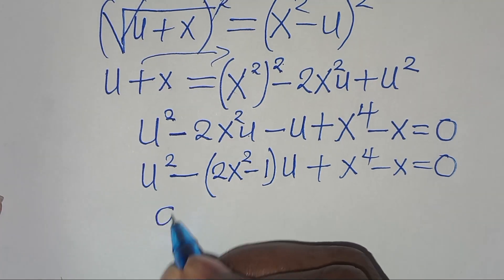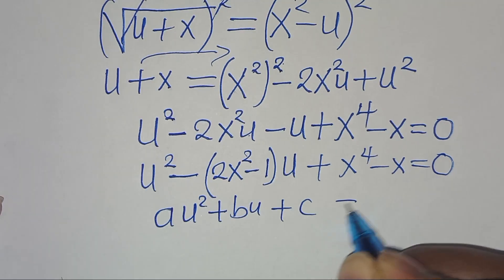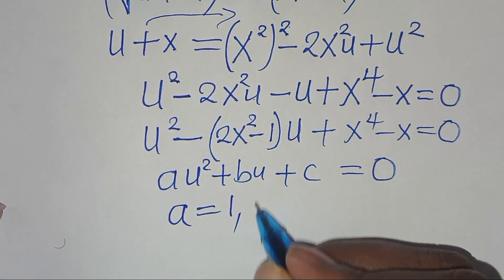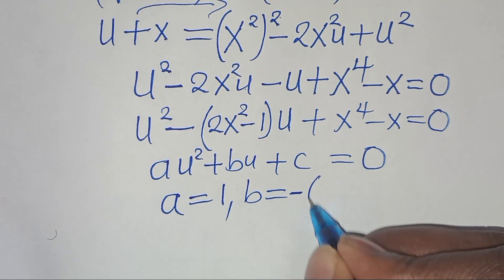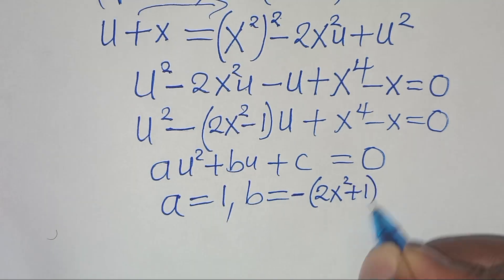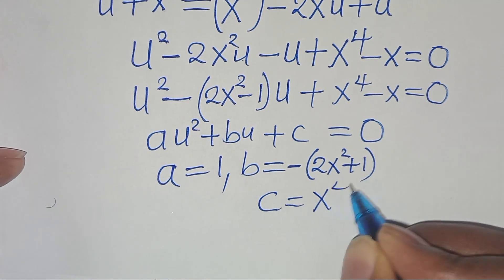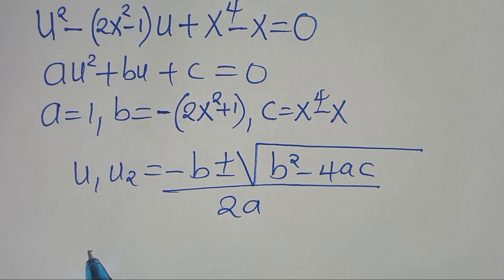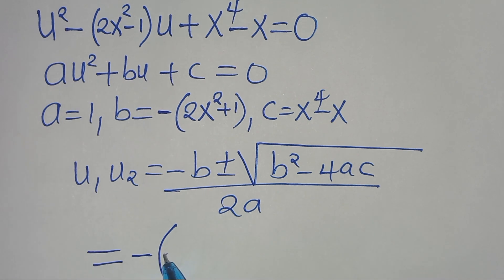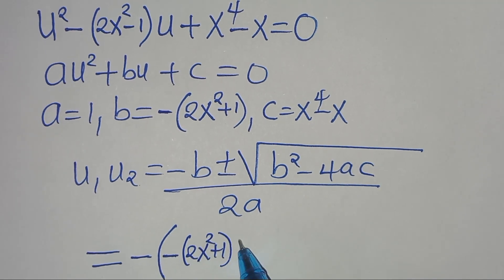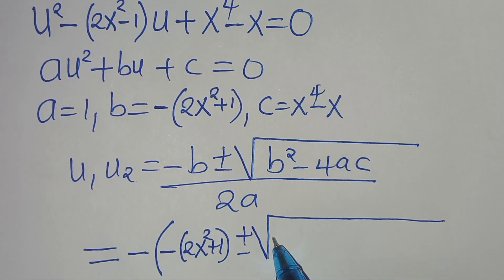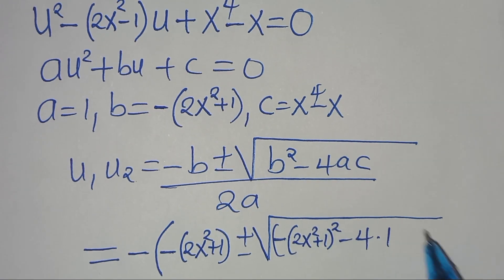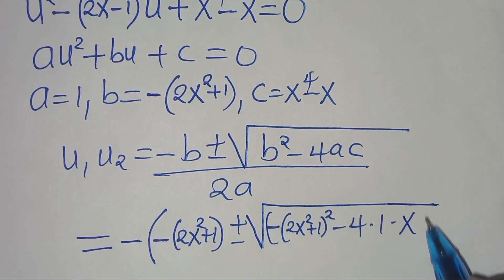From this quadratic equation, a equals 1, b equals negative (2x squared plus 1), and c equals x to the power of 4 minus x. Substituting into the quadratic formula gives: negative times negative (2x squared plus 1), plus or minus the square root of (2x squared plus 1) squared minus 4 times 1 times (x to the power of 4 minus x), all divided by 2.